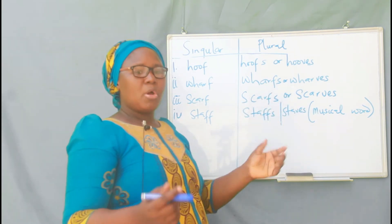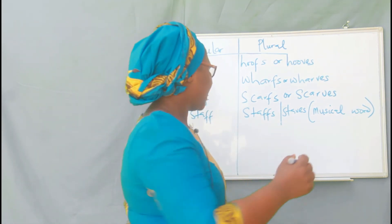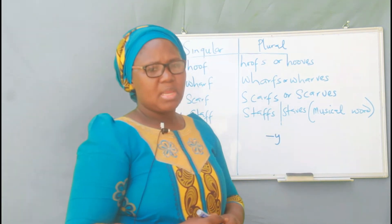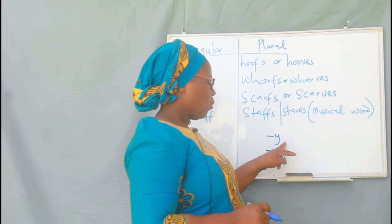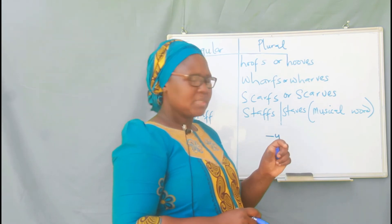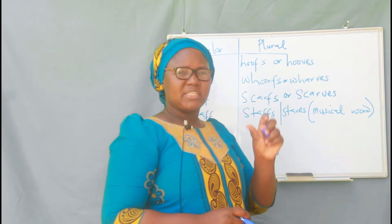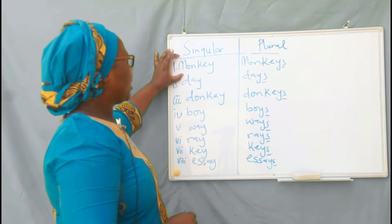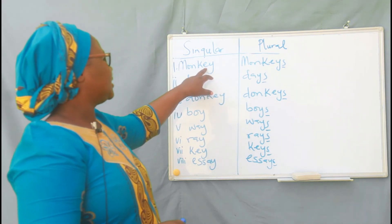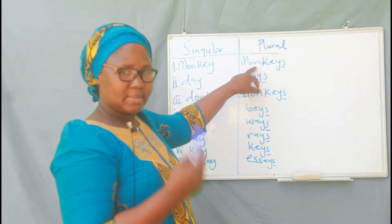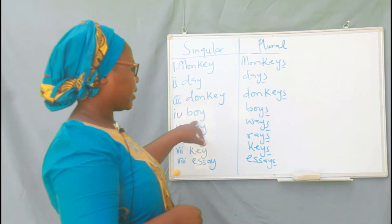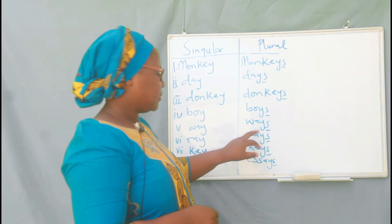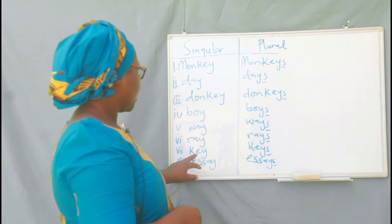We also have some English nouns that end in Y preceded by a vowel. These nouns form their plural simply by the addition of S. Let's take some examples: monkey/monkeys, day/days, donkey/donkeys, boy/boys, way/ways, ray/rays, key/keys, and essay/essays.